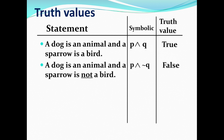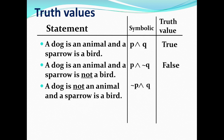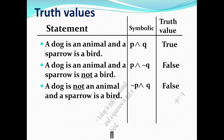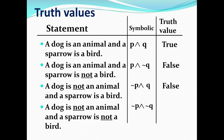Now let's see what happens if you negate P but not Q: a dog is not an animal and a sparrow is a bird. As in the previous case, the entirety of the statement is false. What if both P and Q are false? The statement would be: a dog is not an animal and a sparrow is not a bird. Obviously, in this case the statement is also false.